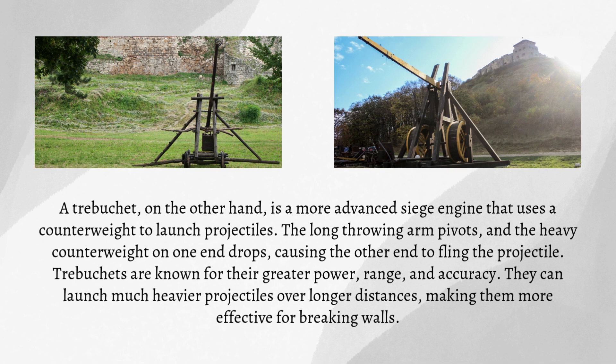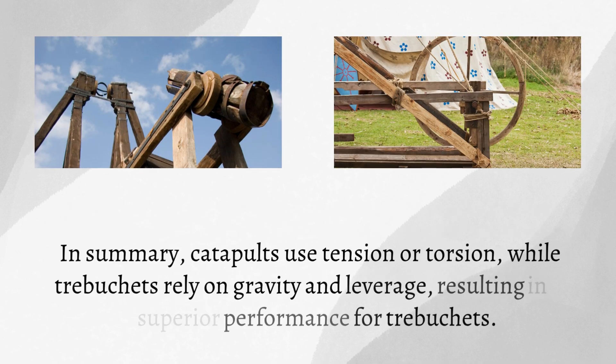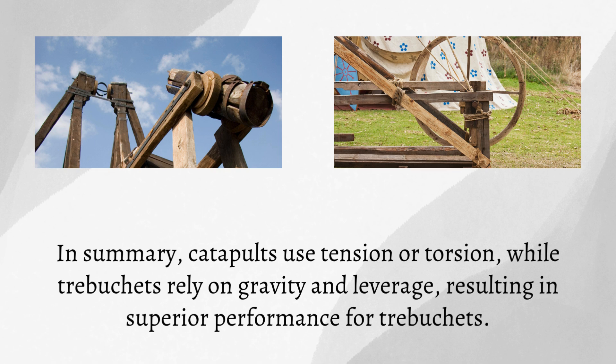They can launch much heavier projectiles over longer distances, making them more effective for breaking walls. In summary, catapults use tension or torsion, while trebuchets rely on gravity and leverage, resulting in superior performance for trebuchets.